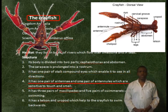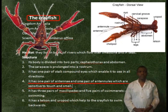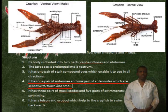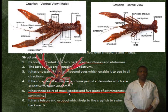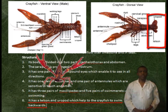It has one pair of antennae and one pair of antennules, which are sensitive to touch and smell. It has three pairs of maxillae and five pairs of swimmerets used for swimming. It has a telson and uropod, which help the crayfish to swim backwards.